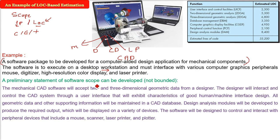This is the preliminary draft scope. It is unbounded now. The mechanical CAD software will accept two or three-dimensional geometric data from a designer. The designer will interact and control the CAD system through a user interface that will exhibit characteristics of good human-machine interface design. So, user interface and control facilities we are talking about. All geometric data and supporting information will be maintained in a CAD database - we are talking about database management. Design analysis modules will be developed to produce the required output displayed on various devices. The software will control and interact with peripheral devices including mouse, scanner, laser, printer, and plotter. So here we have to have a peripheral control function.